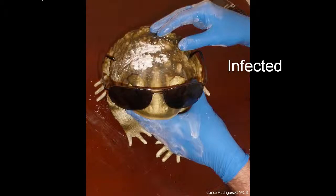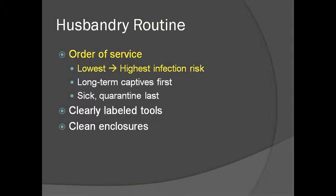The point of this demonstration is that gloves are simply another tool that can be used when trying to prevent the spread of pathogens, but like any tool, need to be used thoughtfully. The organization of the husbandry routine is an important factor in preventing spread of disease. In particular, the order that enclosures are serviced in is key.